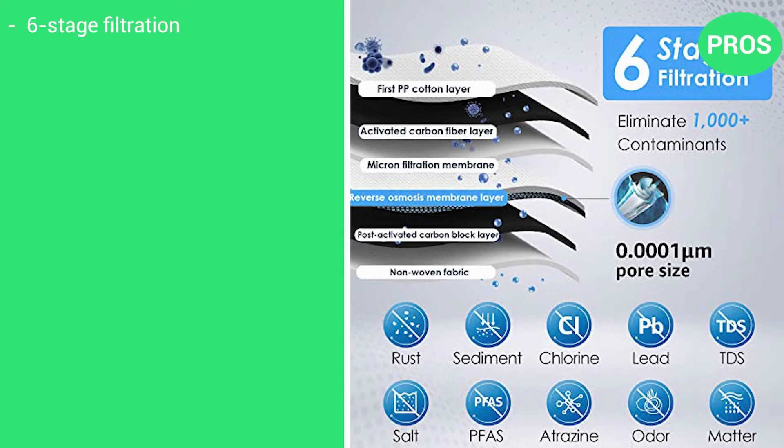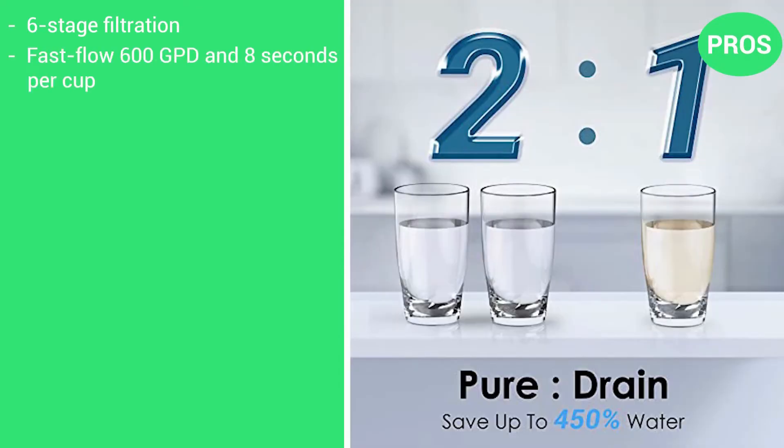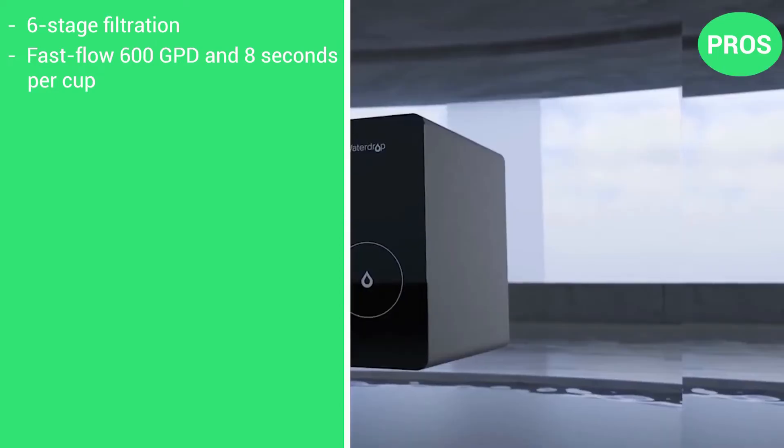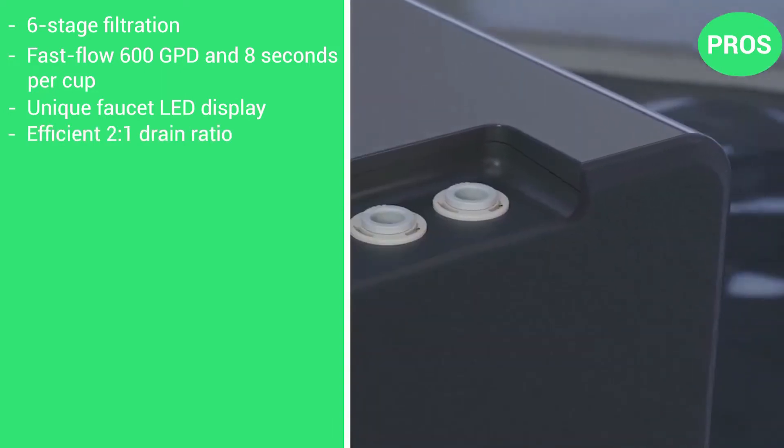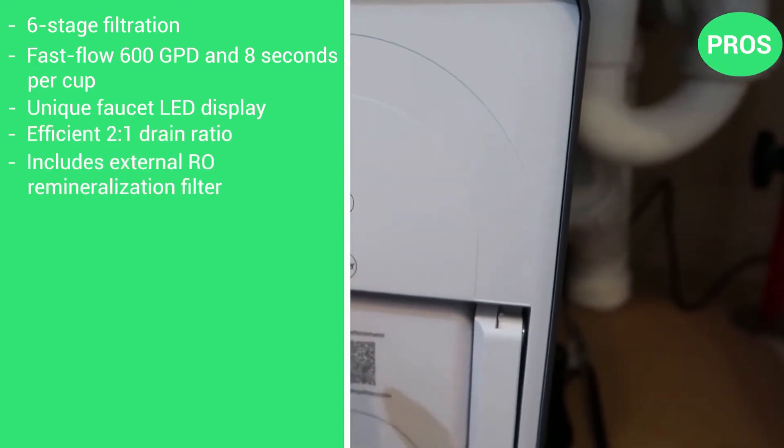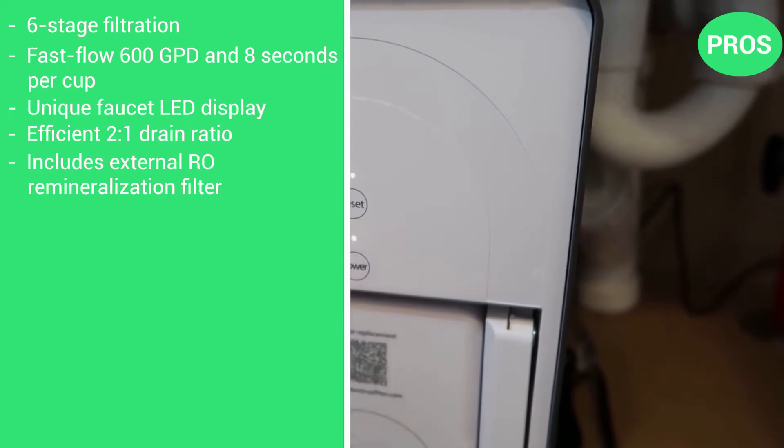Here are the pros. It features 6-stage filtration, fast flow 600 GPD and 8 seconds per cup, unique faucet LED display, efficient 2-to-1 drain ratio, includes external RO remineralization filter, and the con: